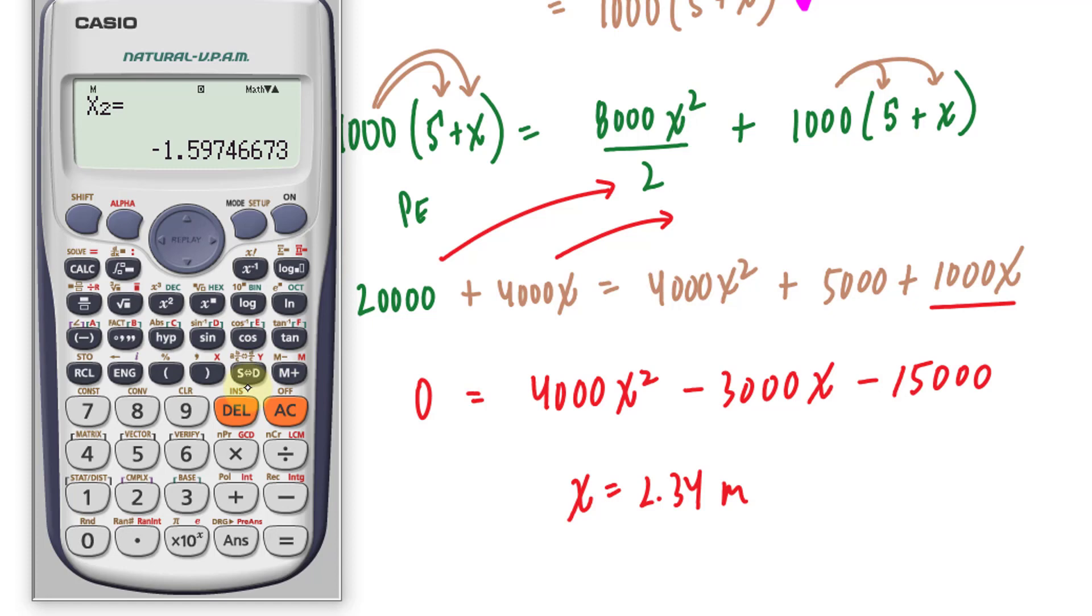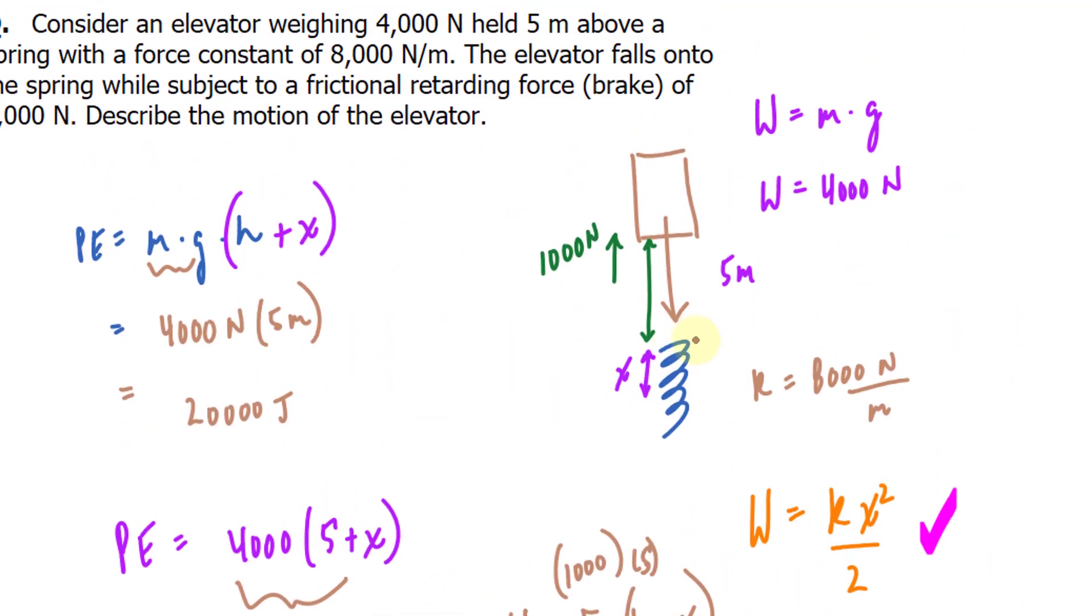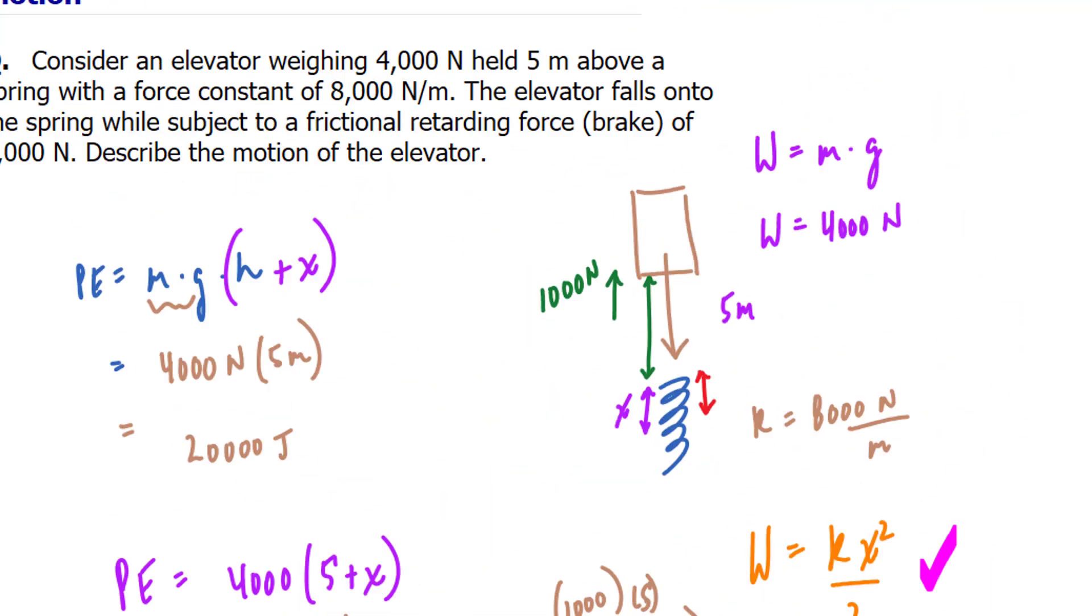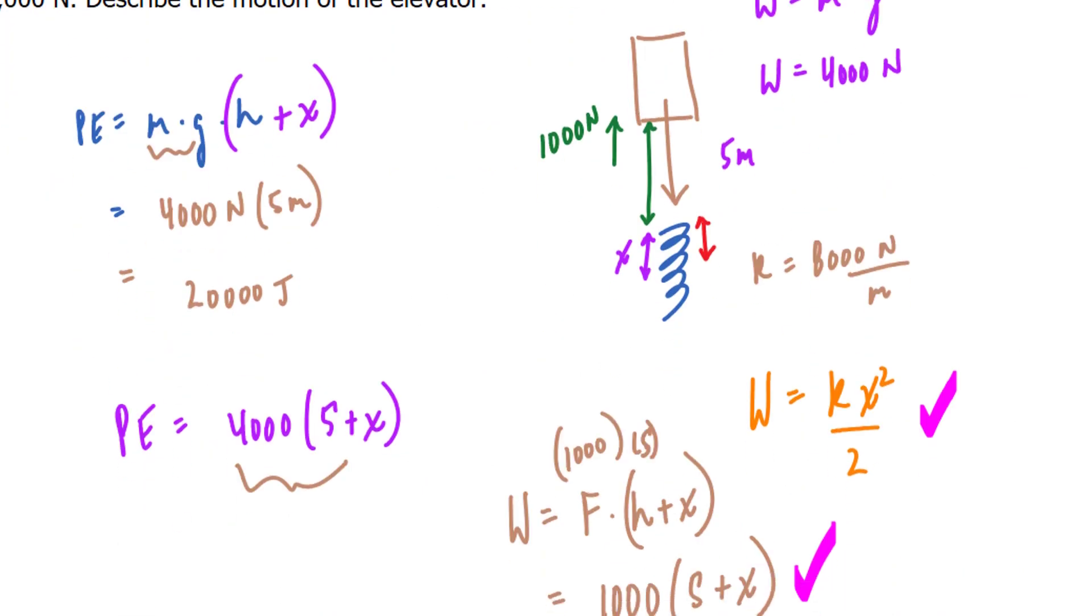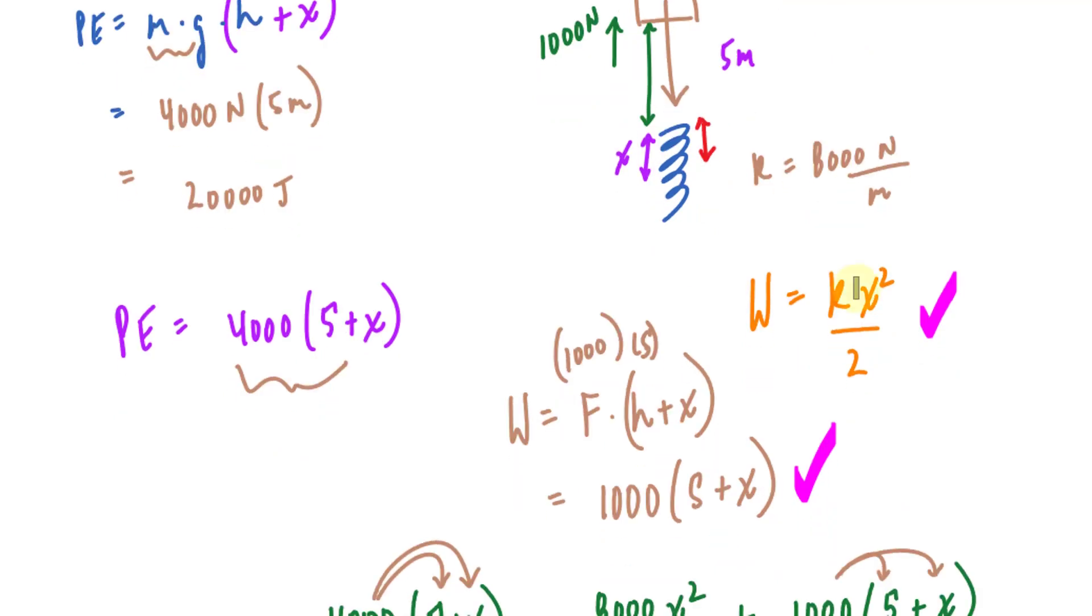We will be ignoring the negative version because it doesn't make sense in the context of this question. So the amount that it will compress is equal to 2.34, and if we wanted to find out the amount of work required to compress the spring, we would substitute that value of x right here.